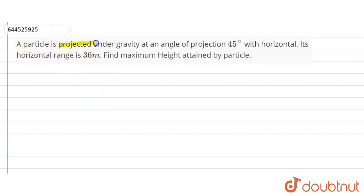A particle is projected under gravity at an angle of projection 45 degrees with horizontal. Its horizontal range is given as 36 meters. Find the maximum height attained by the particle.